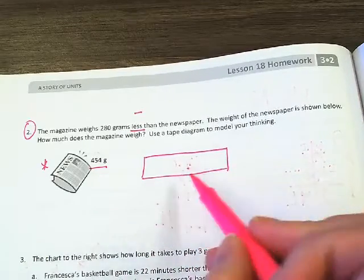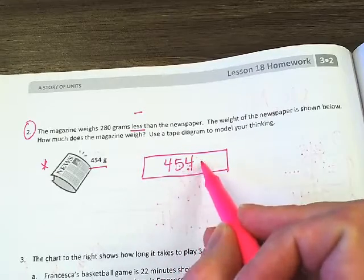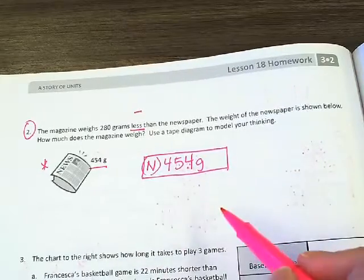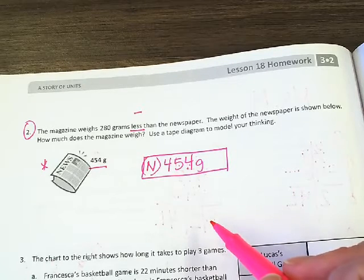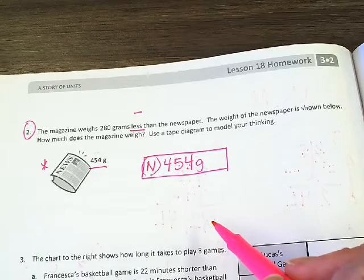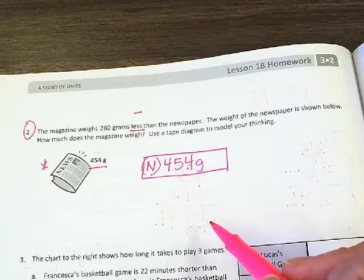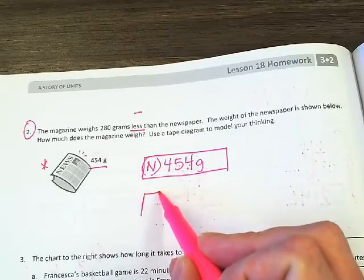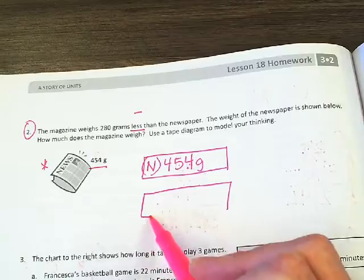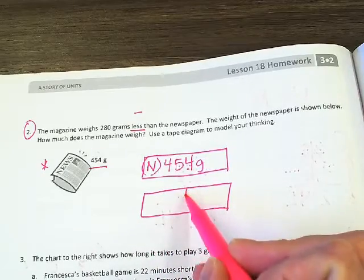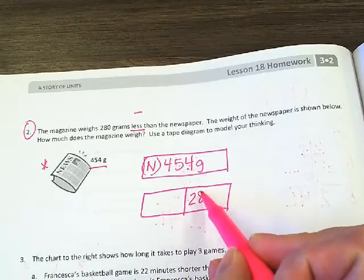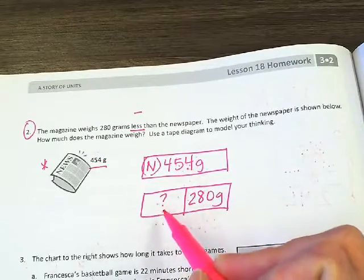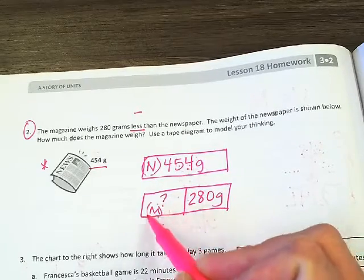Two pieces of a tape diagram. 454 grams, tape diagram 454 grams. This is the newspaper, right? Now the magazine weighs 280 grams less. So two pieces of it, one is going to be 280 grams. This right here is the magazine. How much does it weigh?